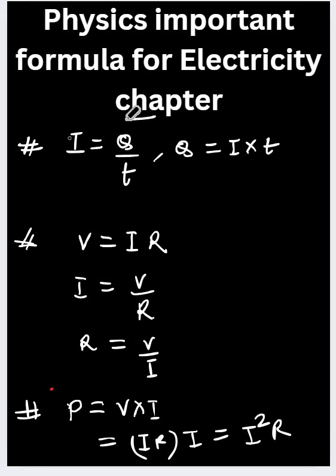The first is the current formula. What is current? The formula itself tells you that it is the rate of flow of charge, so I = Q/t. The SI unit is ampere, which we denote with A. Charge we write with capital Q (coulombs), and time is in seconds.